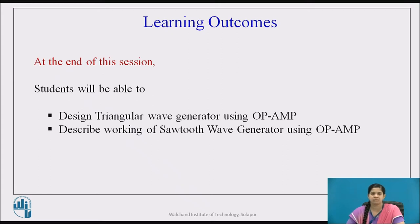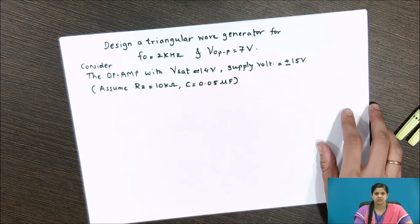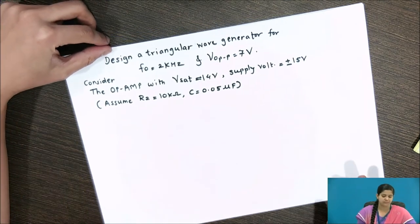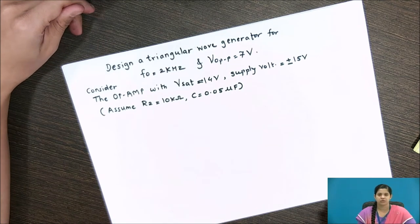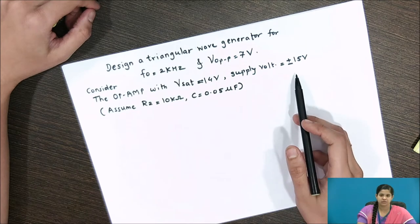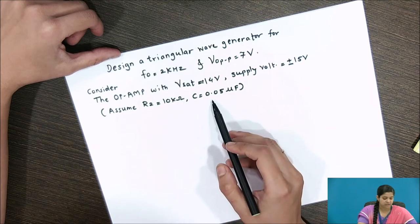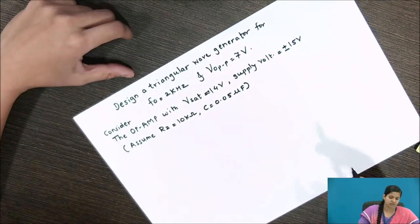Before moving towards the design problem of triangular wave generation, you should recall the working of triangular waveform generator using op-amp and go through the calculation of design parameters. The problem statement is to design a triangular wave generator for a frequency of 2 kilohertz and an output peak-to-peak voltage of 7 volts, with op-amp saturation voltage Vsat equal to 14 volts and supply voltage of plus or minus 15 volts. Assume R2 is 10 kilohm and capacitor value is 0.05 microfarad.